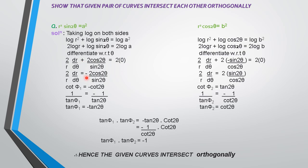Shifting the term to the other side gives a minus sign. We know that (1/r)·(dr/dθ) = cot ψ. So cot ψ₁ = −cos2θ / sin2θ, which equals −cot2θ.